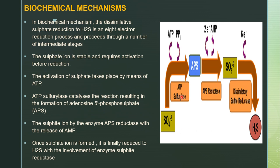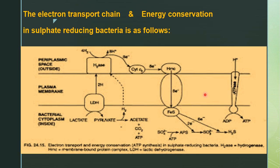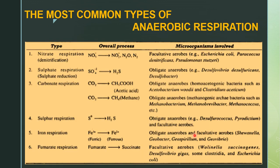Overall, in sulphate respiration: sulphate is converted to APS, APS gives rise to sulfite, and sulfite is converted to H₂S. That covers the complete mechanism of sulphate respiration or sulphate reduction.